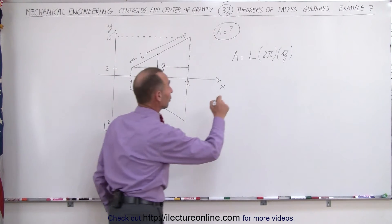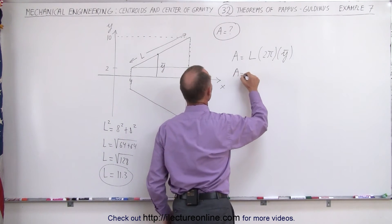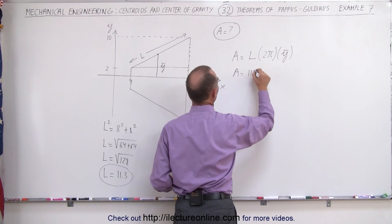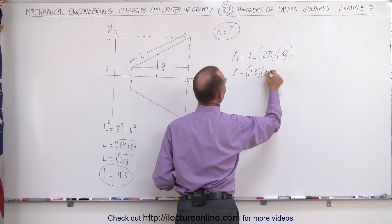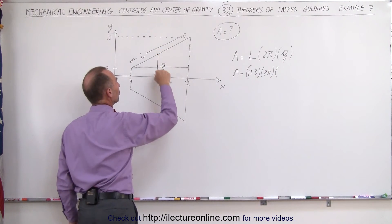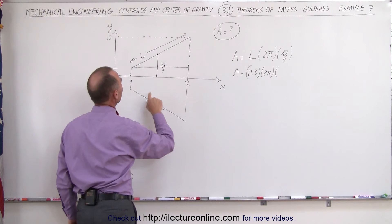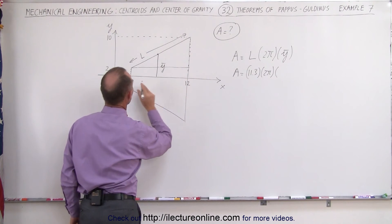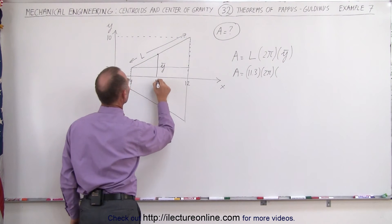That can then go into the equation. The surface area of the truncated cone is equal to the length, 11.3, times 2 pi times the radius of the centroid. The centroid would be at the halfway point between 4 and 12. That would be 16 divided by 2, that would be 8.